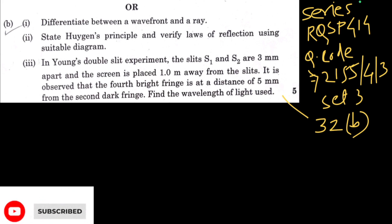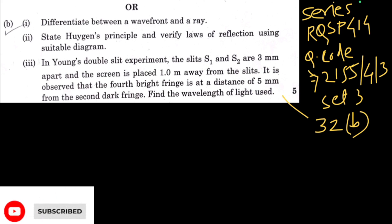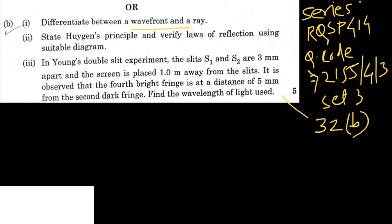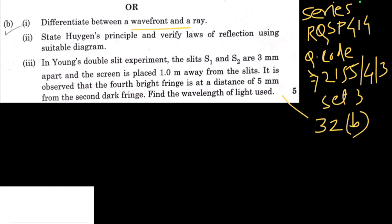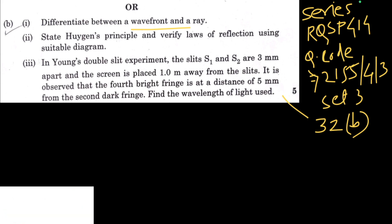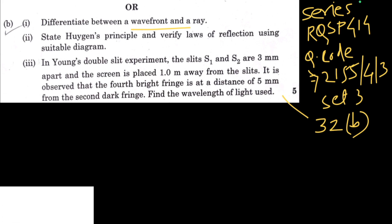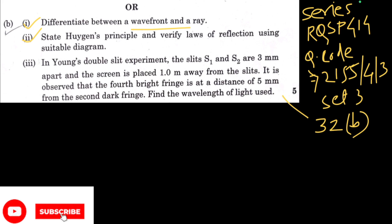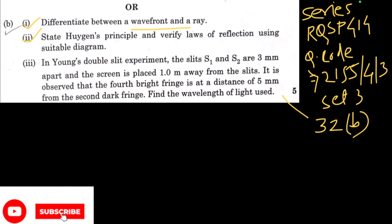I will not discuss the theoretical question answers — you can differentiate between wavefront and ray yourself. A wavefront is the locus of different points from which wavelets are assumed to be produced. A ray is the path of light. The second part asks to state Huygens' principle and verify the law of reflection using a suitable diagram, which is a standard prove-type question.